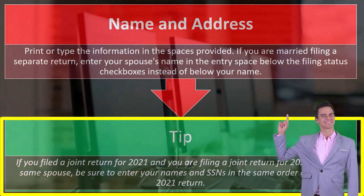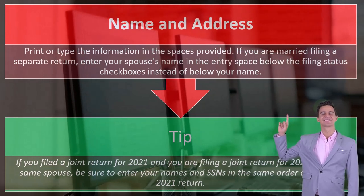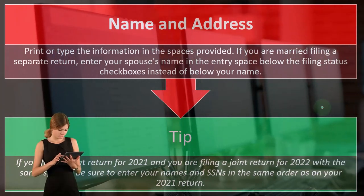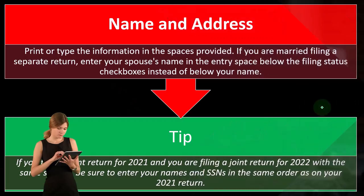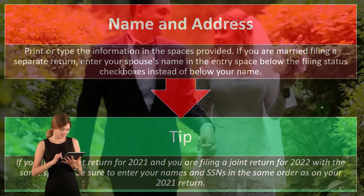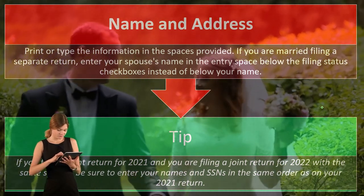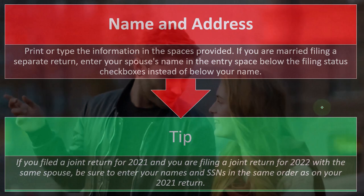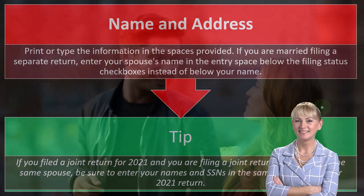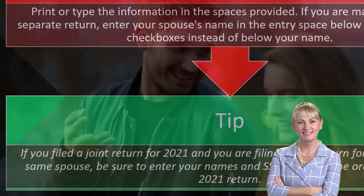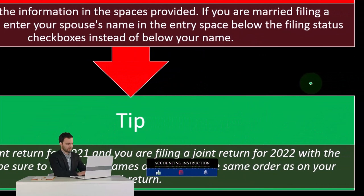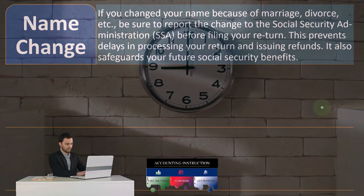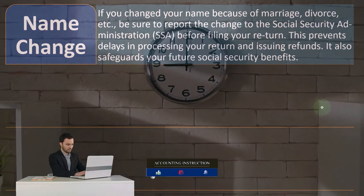Tip: if you filed a joint return for 2021 and are filing a joint return for 2022 with the same spouse, be sure to enter your names and social security numbers in the same order as your 2021 return. Generally, married filing joint has the first spouse on line one and the second spouse on line two. If you flip the order — husband then wife one year, wife then husband the next — it's not technically wrong, but it can confuse the IRS automated system when it tries to compare the same line across years.